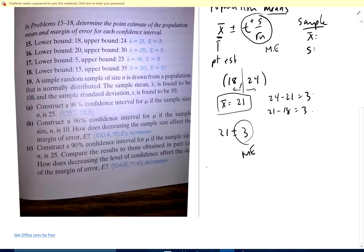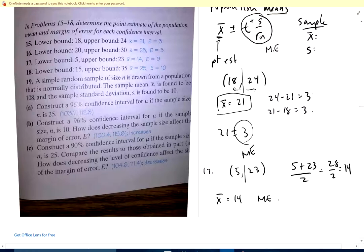17 is just like it. Lower bound is 5, upper bound is 23. So I've got to find halfway, 5 plus 23 over 2, which is 28 over 2, which is 14. X bar is 14, and then the margin of error is what I add or subtract. If I go 14 minus 5 is 9, and if I go 14 plus 9 is 23, so there's my margin of error. My confidence interval is really 14 plus or minus 9.